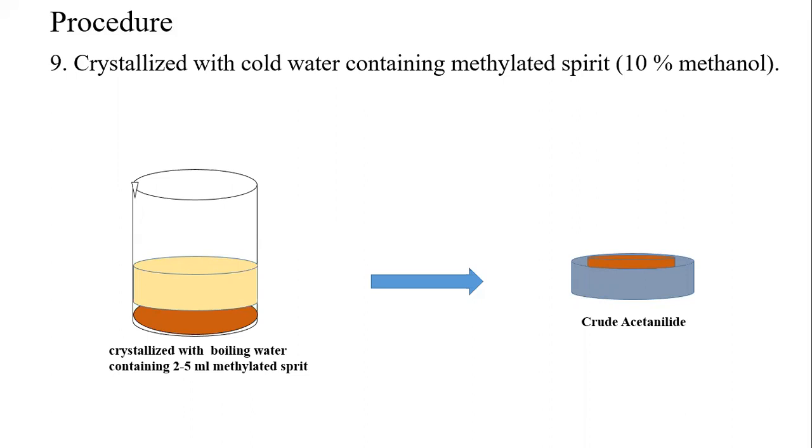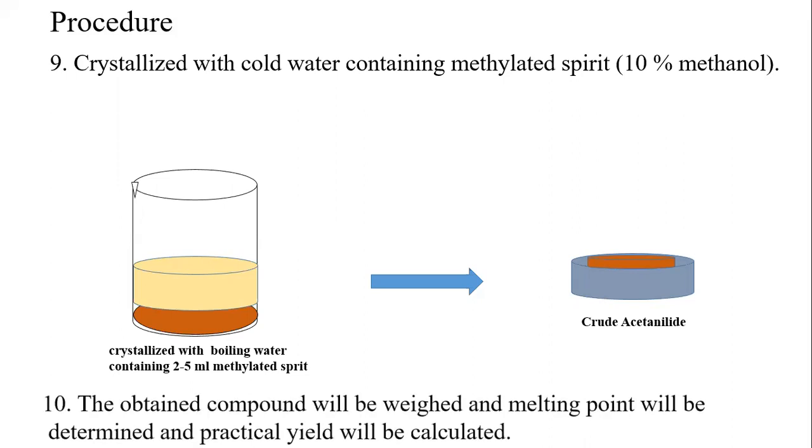After that, we will again filter it and we will get crude acetanilide. This crude acetanilide will be wet, so we will wait for some time till it gets dry and then we will take the weight of the compound obtained and will also determine the melting point in the lab. After taking the weight, we will also calculate the practical yield of the acetanilide we obtained during the experiment.